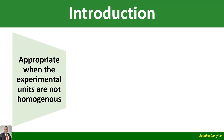Randomized Complete Block Design is very appropriate when the experimental units are not homogeneous. You'll recall that in the last module, when we looked at Completely Randomized Design, we said it is applicable in situations where our experimental units are homogeneous. Oftentimes the experimental units are not homogeneous. For example, in field experiments, you'll realize that fertility gradient varies from one part of the field to another.